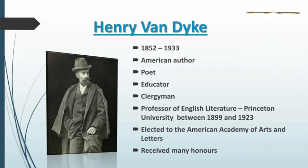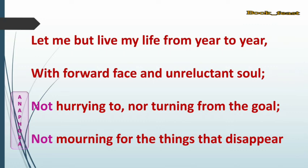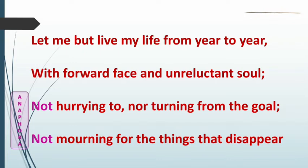Let's get into the line-by-line summary. 'Let me live my life from year to year.' Here, the poet says that he wants to live his life to the fullest — year by year, he wants to enjoy and lead his life. 'With forward face and unreluctant soul.' He wants to lead his life with a forward face, meaning he never wants to look back and think about his past. He should not live in the past; instead, he should move forward toward the future.